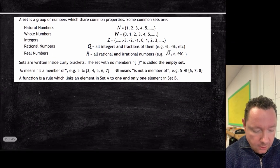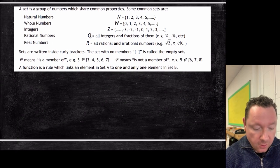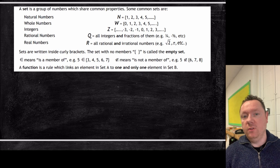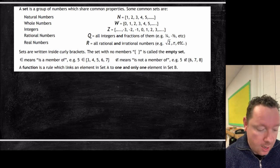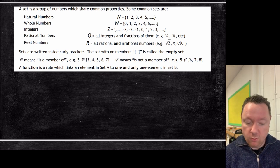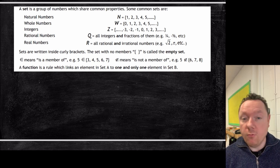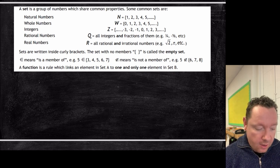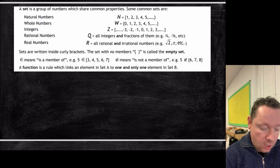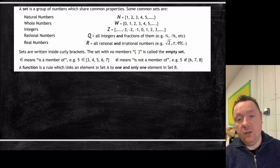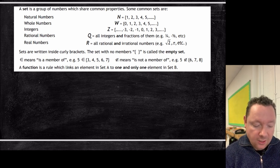So what is a set? A set is a group of numbers that share some common properties. The natural numbers are your normal counting numbers: 1, 2, 3, 4, 5, and so on to infinity. The whole numbers include zero as well: 0, 1, 2, 3, 4, 5 and so on. Then we've got integers, which include all the negative and positive numbers, but still whole numbers. Rational numbers, denoted with a Q, are all integers and fractions — so three quarters, a half, minus a half. Integers are denoted with a Z, whole numbers with W, and natural numbers with N.